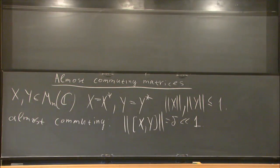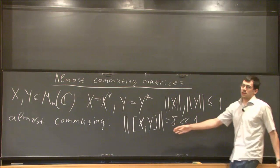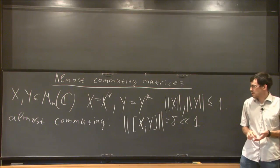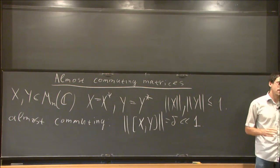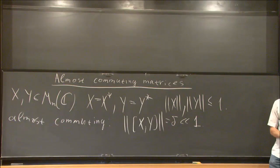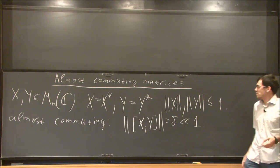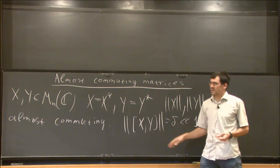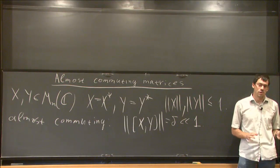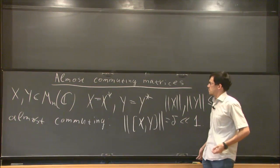The natural question you can ask is: does it imply that they're close to exactly commuting matrices? Interesting things happen if we try to ask this question independently of the dimension. Can we find an estimate such that smallness of the commutator guarantees smallness of the distance to a commuting pair of matrices?